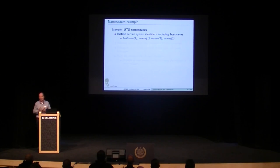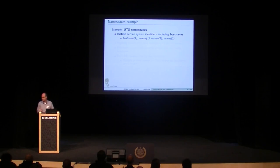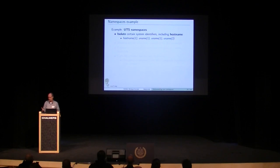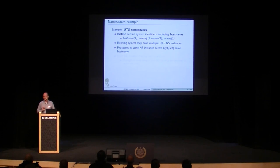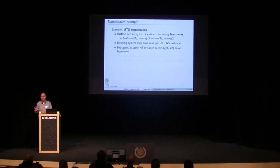UTS namespaces are a good concrete example because they're relatively simple. What's being isolated is a couple of system identifiers including the hostname — the identifier you can see with the uname or hostname command, and change with the hostname command. On any particular system there might be multiple UTS namespace instances. Processes in one instance see a certain hostname; if one of those processes changes the hostname, the change is visible to all others in the same instance, but not to processes in other UTS namespace instances.